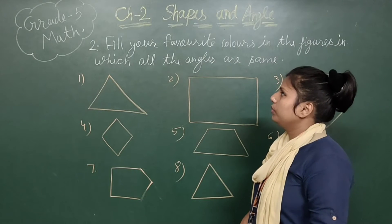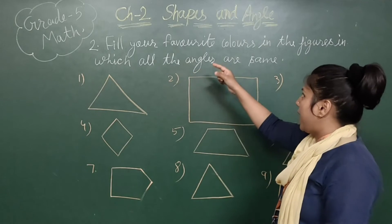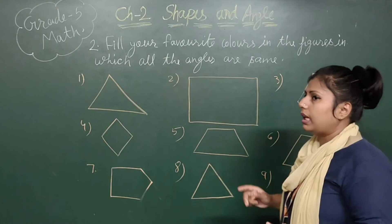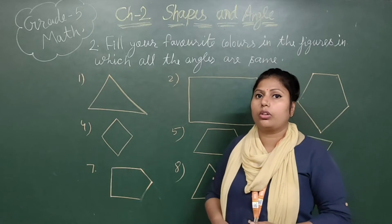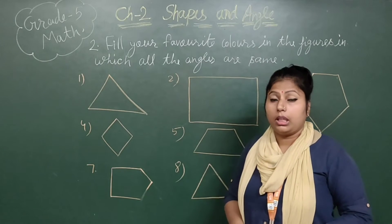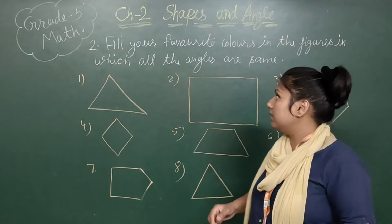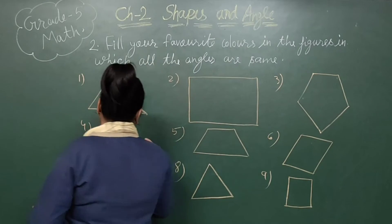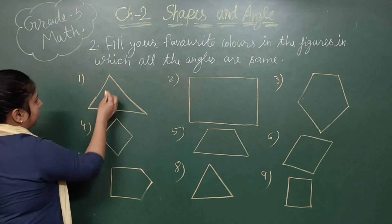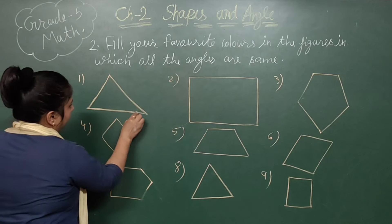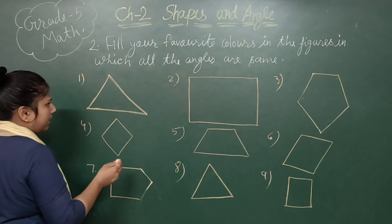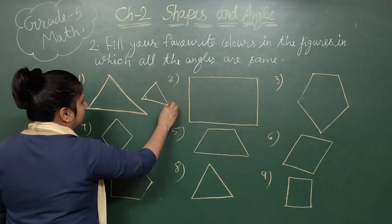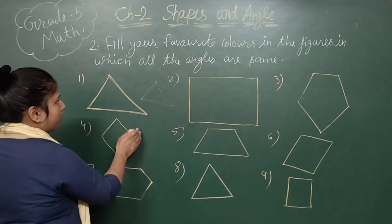Now see question number two from the workbook: Fill your favorite color in the figures in which all the angles are the same. We can see shapes like triangle, rectangle, pentagon, octagon, hexagon, heptagon. We need to check whether all their angles are the same or not. You can see some shapes where the angle is different. You can recognize easily this shape is not having the same angle, so you cannot fill the color in that.